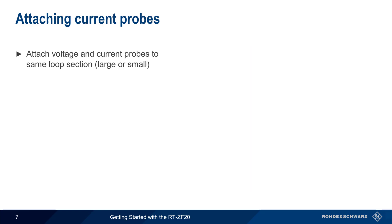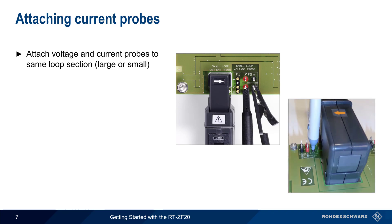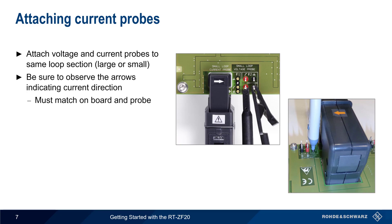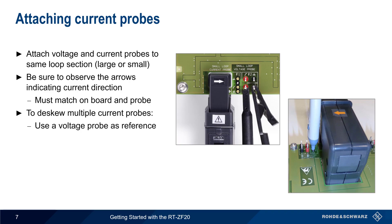When de-skewing a combination of voltage and current probes, these must all be attached to the same loop section as shown. The current probe should be clamped through the opening such that the arrows indicating current direction are the same on the probe and on the fixture. Each loop section has only a single current probe attachment point, so in order to de-skew multiple current probes, a voltage probe should be used as a reference, and each current probe is then individually aligned with the reference voltage probe.